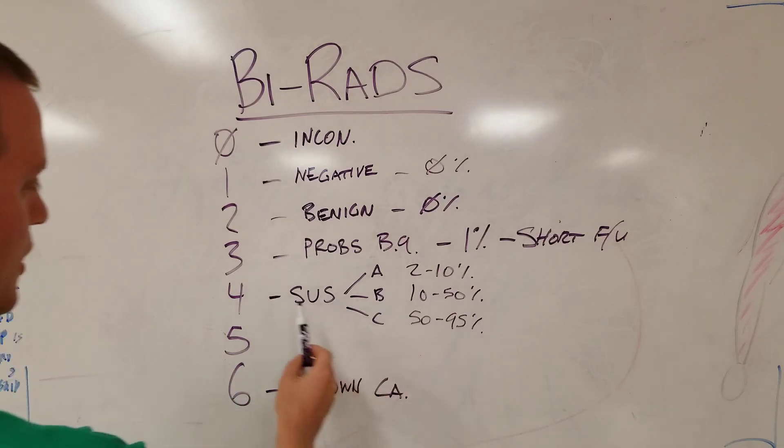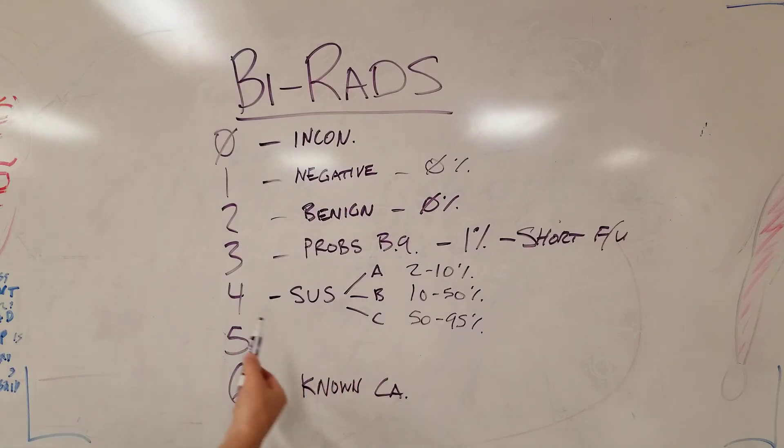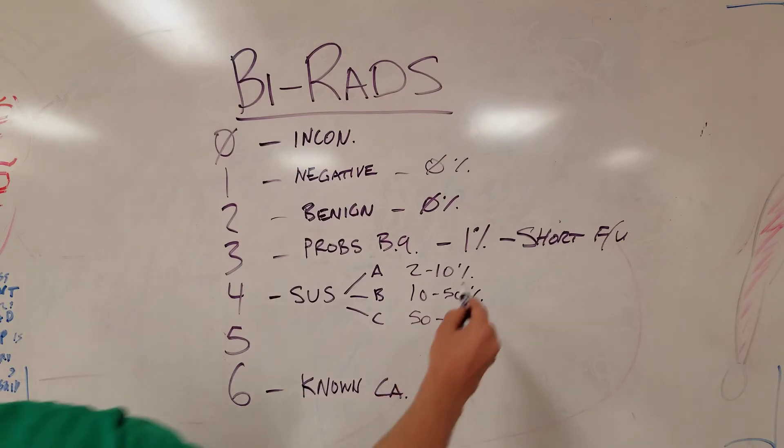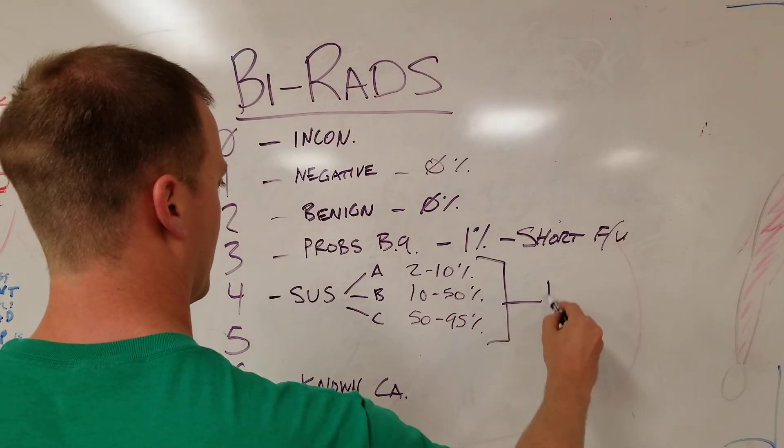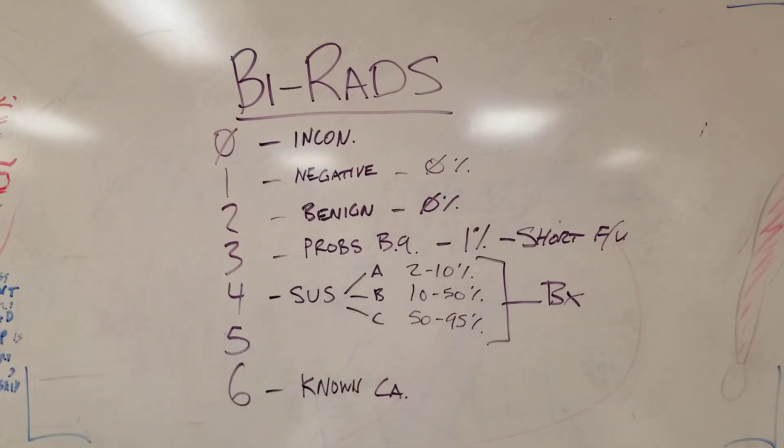You can see that a BI-RADS 4C has a higher chance, obviously, than BI-RADS 4A. It doesn't really matter though—this is more of an academic point to discuss the subtleties between these three—because all of these tell you we need to get a biopsy. Sometimes that biopsy is an ultrasound-guided core needle biopsy. Sometimes that biopsy is an excisional biopsy or a lumpectomy.